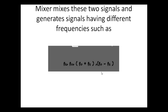These two signals are mixed by the mixer, and the mixer will generate signals having different frequencies such as FS, F0, the sum (F0 + FS), and the difference (F0 - FS).